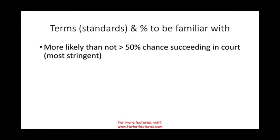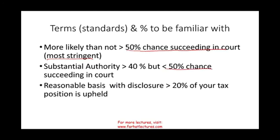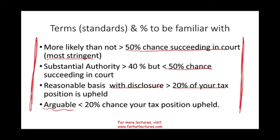Key standards: 'More likely than not' means more than a 50% chance of succeeding in court — the most stringent standard. 'Substantial authority' means more than 40% but less than 50% chance of succeeding. 'Reasonable basis with disclosure' means you disclose the position and have more than a 20% chance. 'Arguable' means less than a 20% chance. These standards are used to determine whether a position is unreasonable.